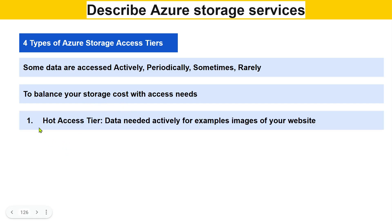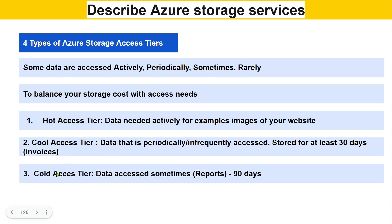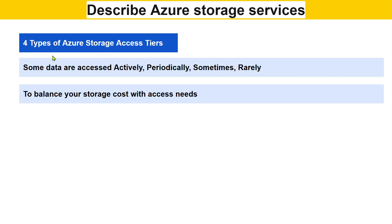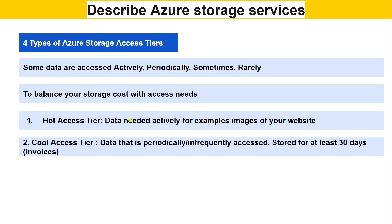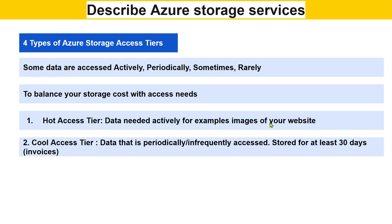The four Azure Storage Access Tiers are: Hot, Cool, Cold, and Archive. Hot access tier is for data that is actively accessed — for example, images on your website that your application uses constantly. Cool access tier is for data that is periodically or infrequently accessed.